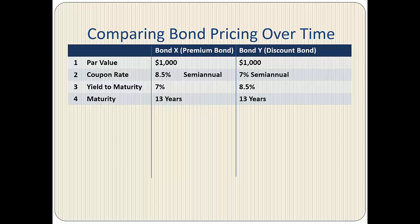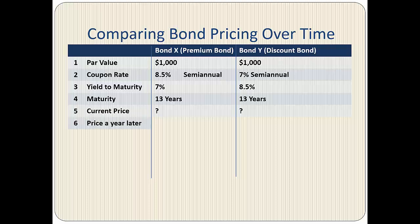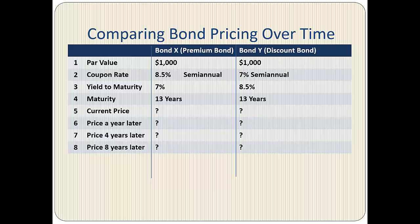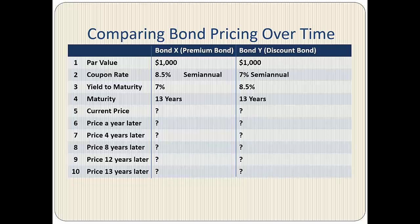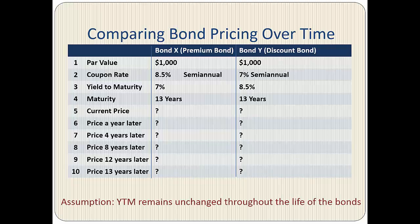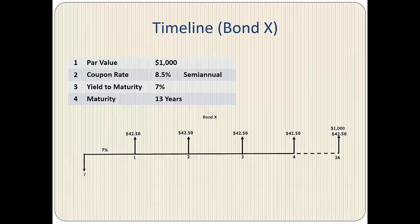Both bonds mature in 13 years or 26 semi-annual periods. We are going to calculate the current price of both bonds, the price a year later, four years later, eight years later, 12 years later, and 13 years later at maturity, assuming the yield to maturity remains unchanged throughout the life of the bonds. This is an important assumption.